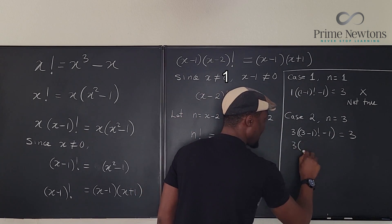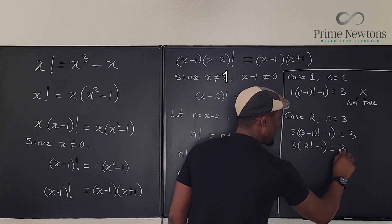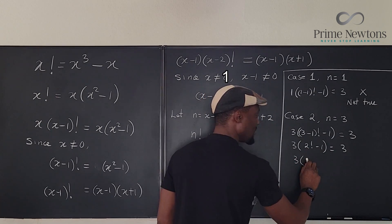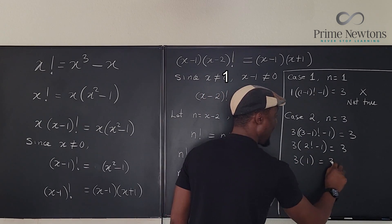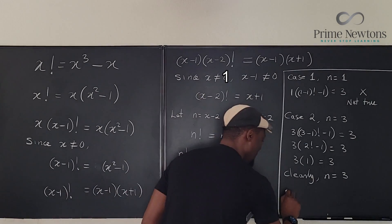So this is 3 times 2 factorial minus 1. That's 3 times 2 factorial is 2. 2 minus 1 is 1. This is it. So clearly our n equals 3.